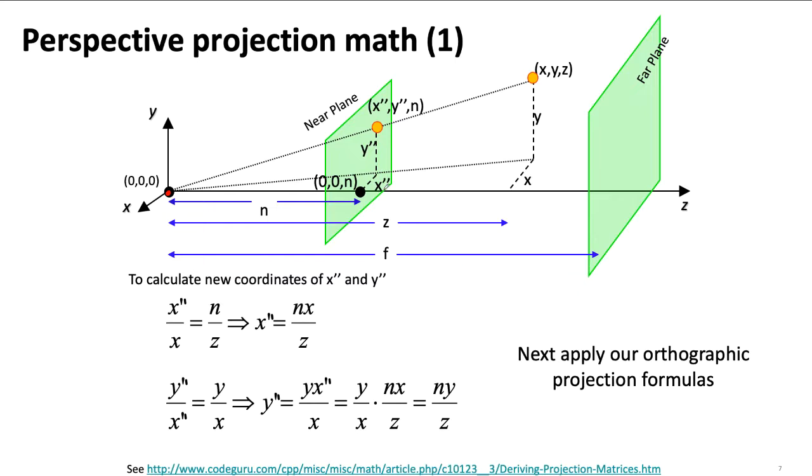if I take the ratio of that X double prime to the original X, that needs to be equal to the ratio of my near plane Z coordinate to the actual Z coordinate that I'm transforming. And if I rearrange that a bit, I can get an expression for that new X double prime in terms of the X that I'm transforming, the near plane, and notice the Z coordinate.